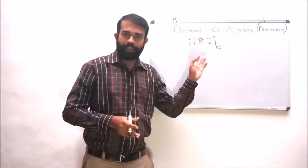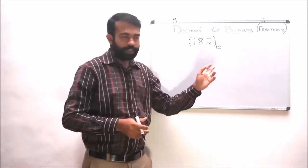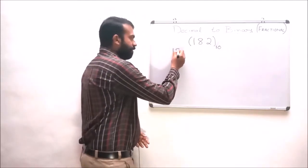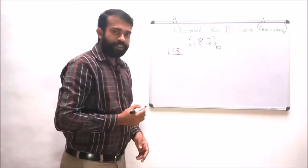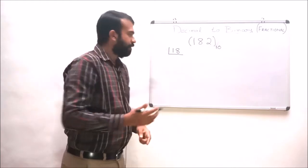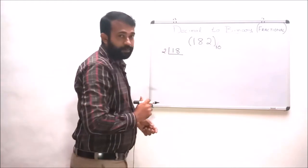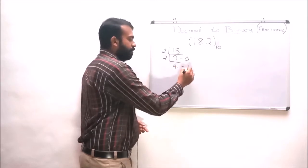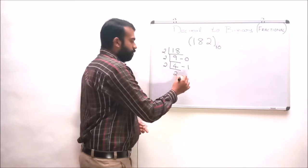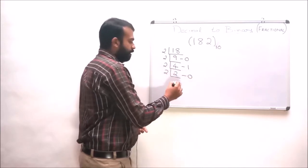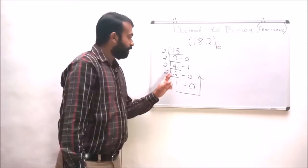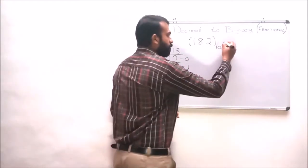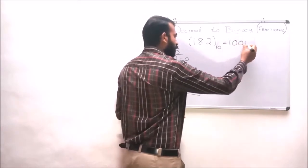Convert the decimal number 18.2 into binary. The whole number portion is 18 and the fractional portion is 0.2. Dividing 18 by 2 gives 9 remainder 0. Dividing 9 by 2 gives 4 remainder 1. Dividing 4 by 2 gives 2 remainder 0. Dividing 2 by 2 gives 1 remainder 0. So the binary equivalent of 18 is 10010.